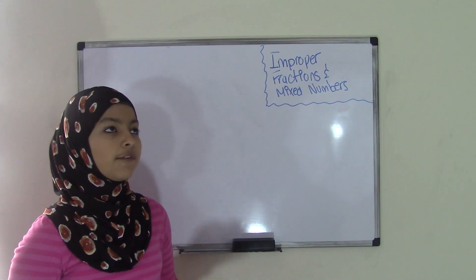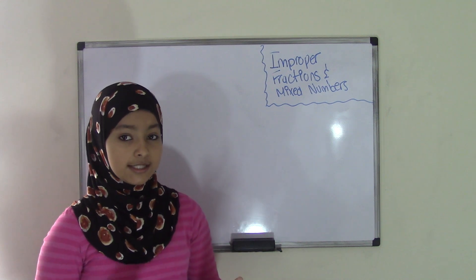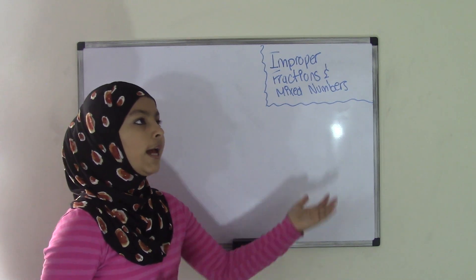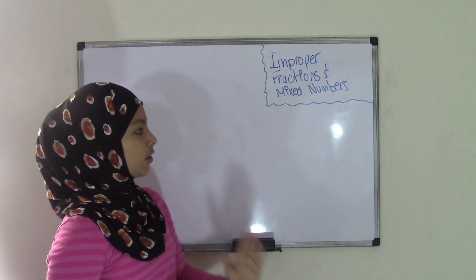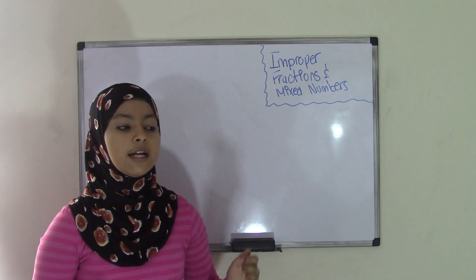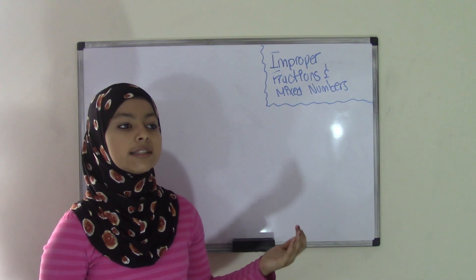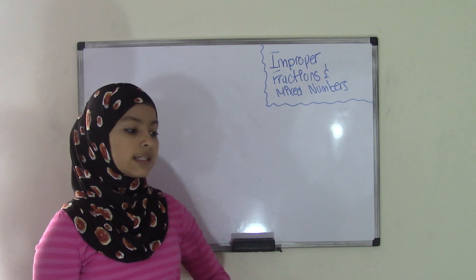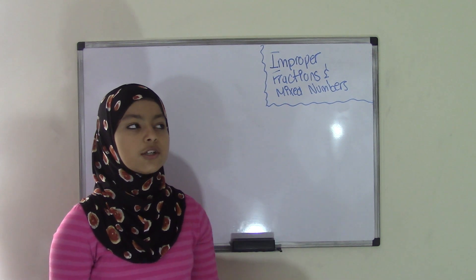This is the first topic in our chapter and it's probably the most important thing you need to know in this chapter, because we're going to be using improper fractions and mixed numbers. In this video I want to cover the terms for each of these and also how to convert from improper fractions to mixed numbers and then reverse, so mixed numbers to improper fractions.